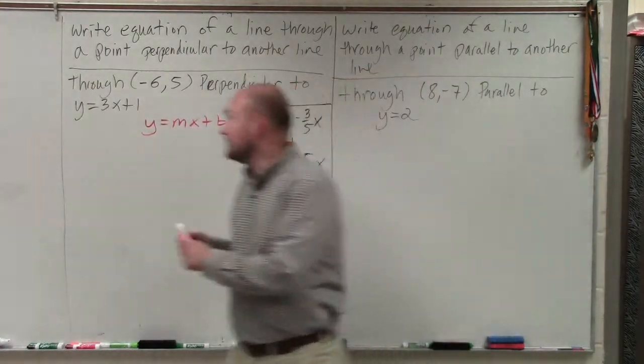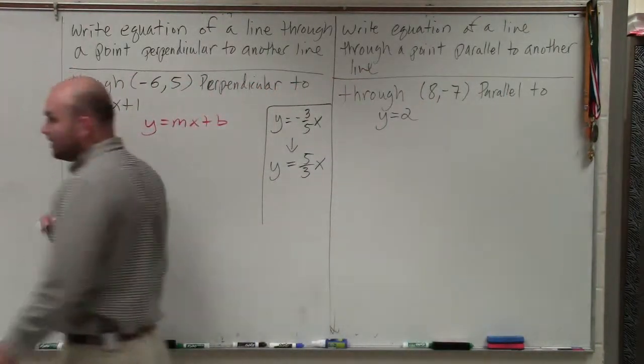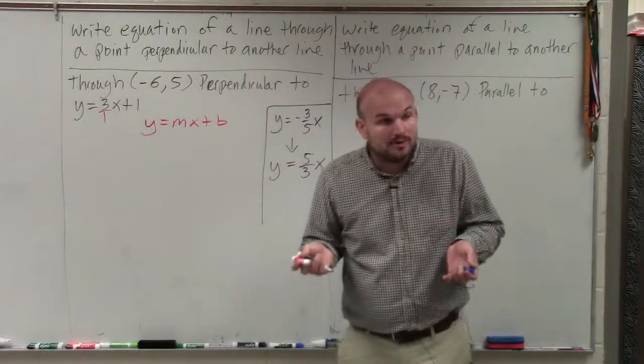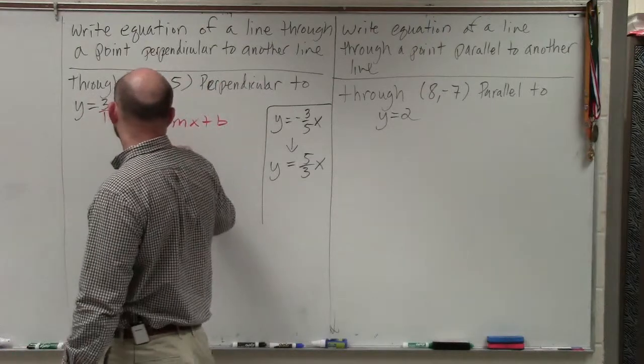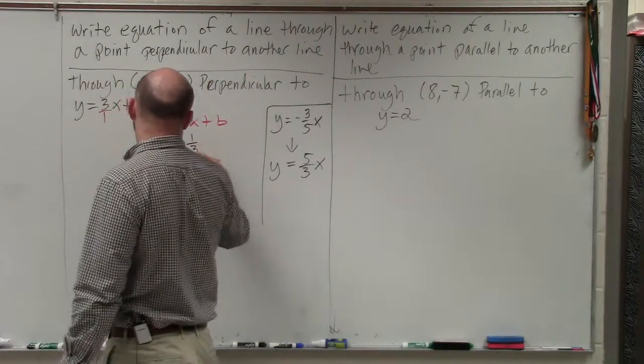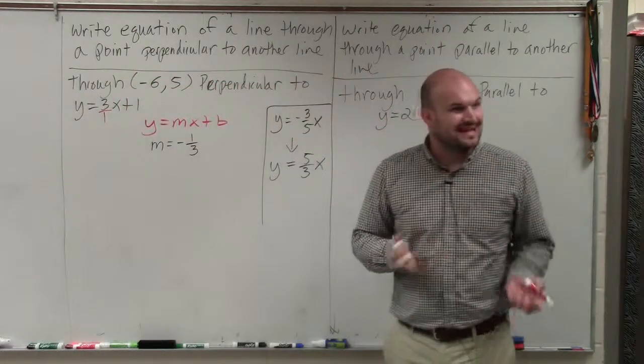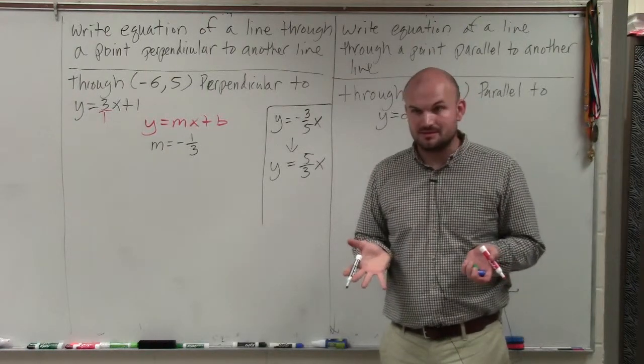we have 3 over 1. So the new slope, the slope of our line, our m, is going to be the opposite reciprocal of that, which would be negative 1 third. Does that make sense? Okay. So now,